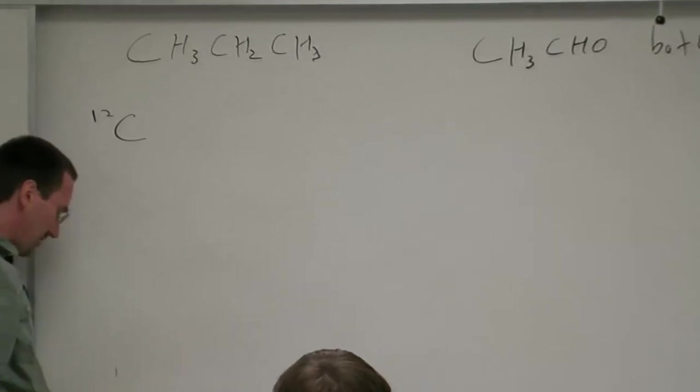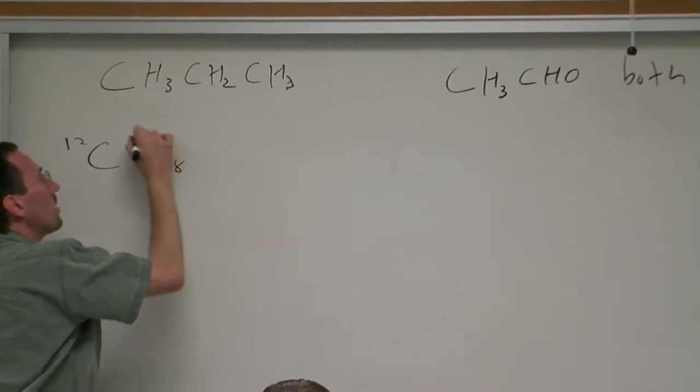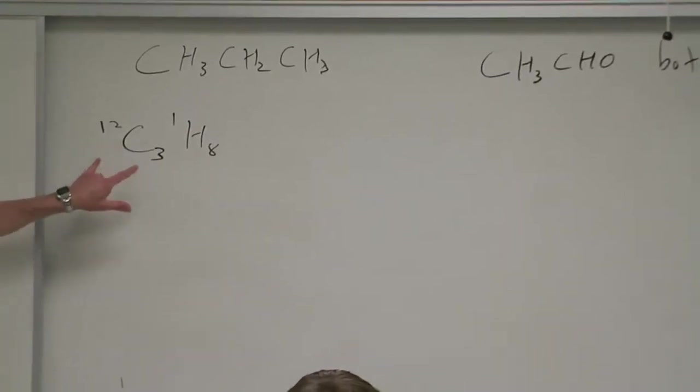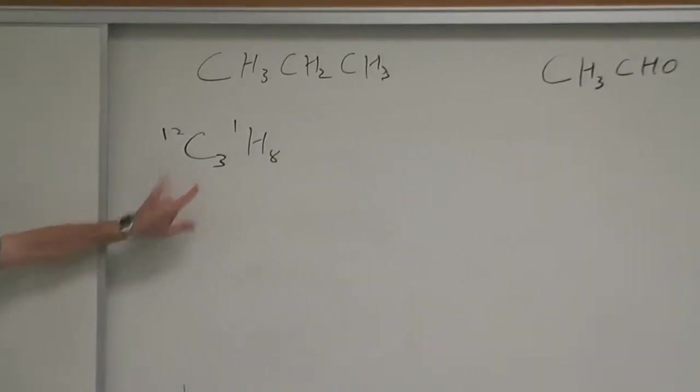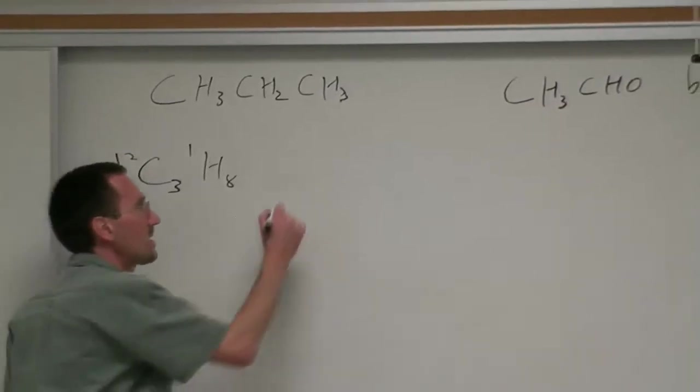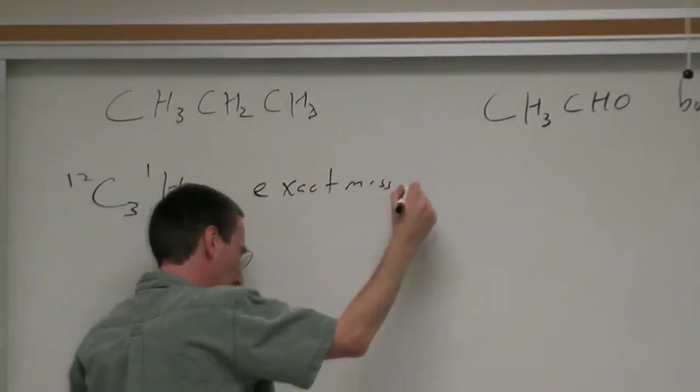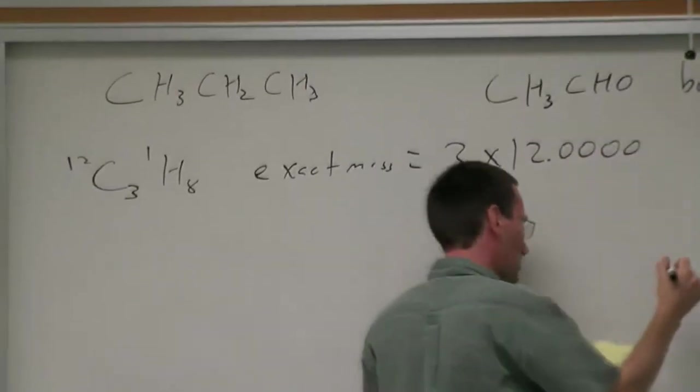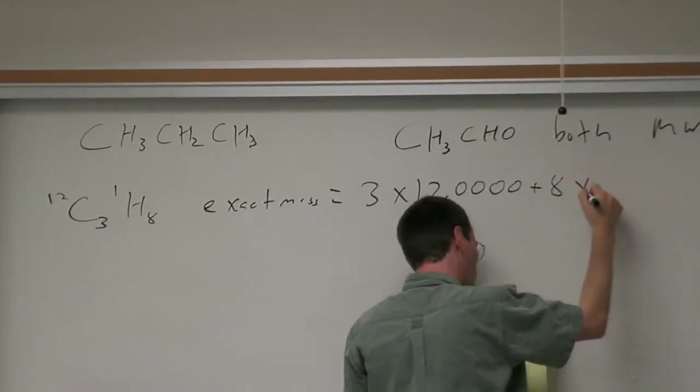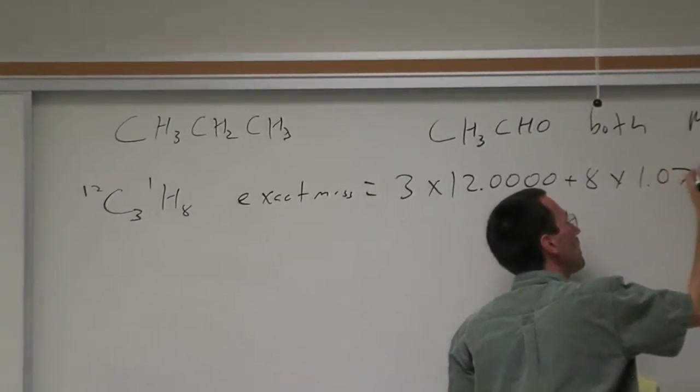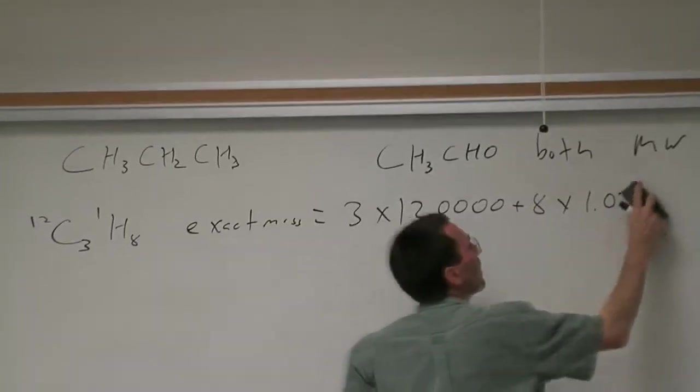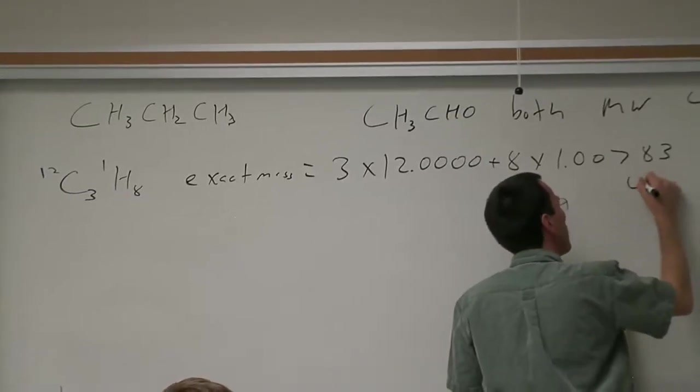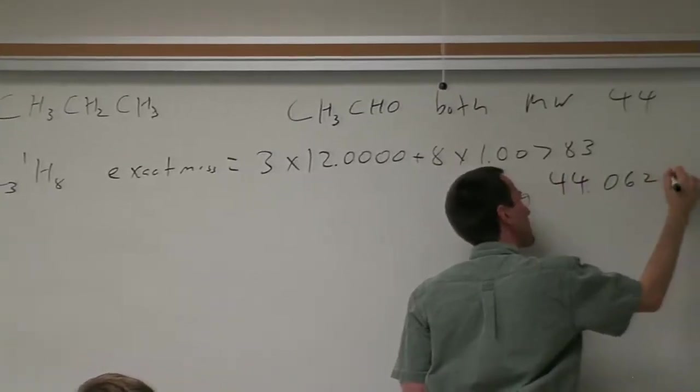If I have C12, 3 and H1, 8, the predominant isotopomer of propane, then the exact mass is equal to 3 times 12.0000 plus 8 times 1.00783, and when I tally that up I get 44.0626.